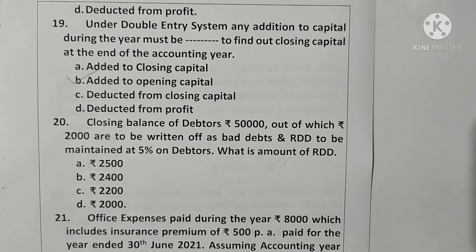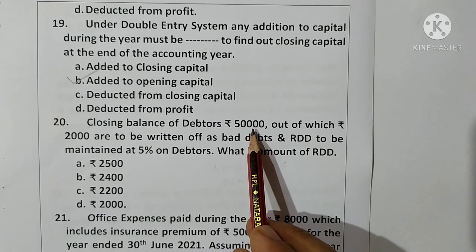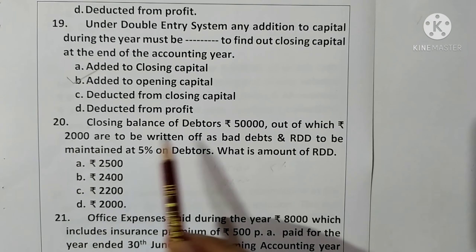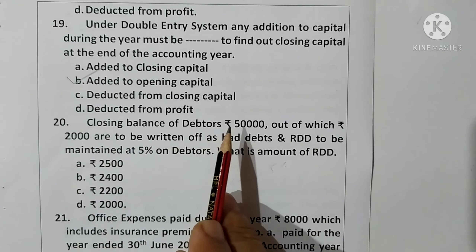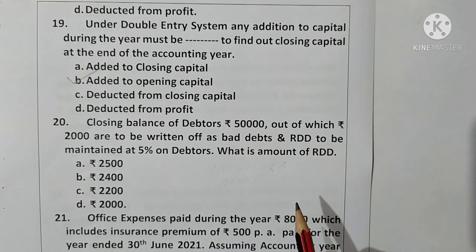Question 20: Closing balance of debtors is rupees 50,000, out of which rupees 2,000 are to be written off as bad debts, and a provision is to be maintained at 5% on debtors. From 50,000 subtract bad debts of 2,000 to get 48,000; 5% on 48,000 = rupees 2,400. Option B is correct.